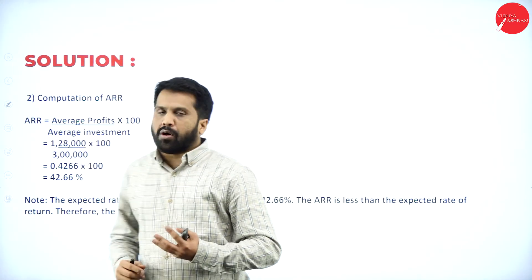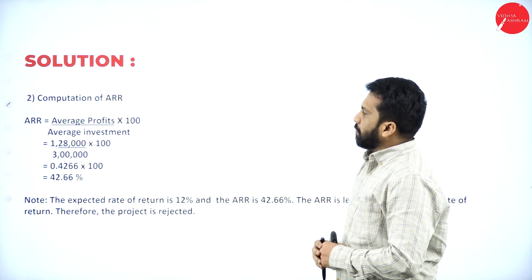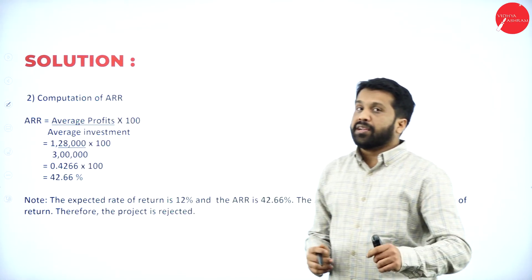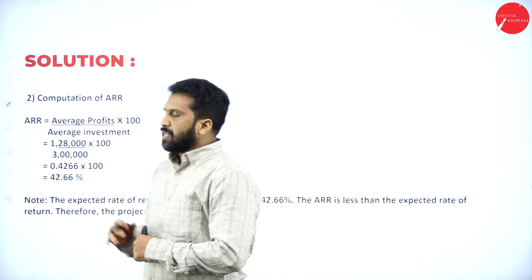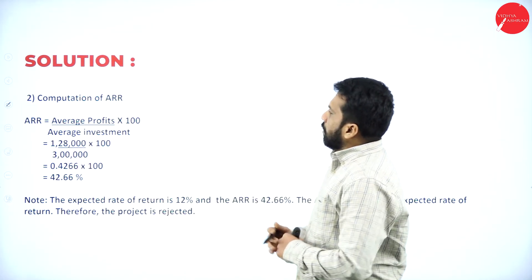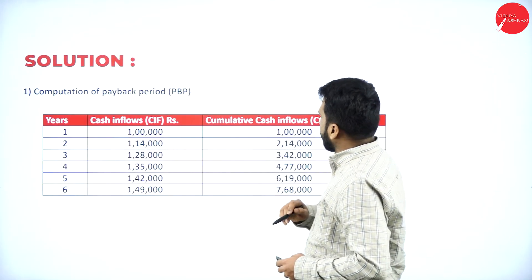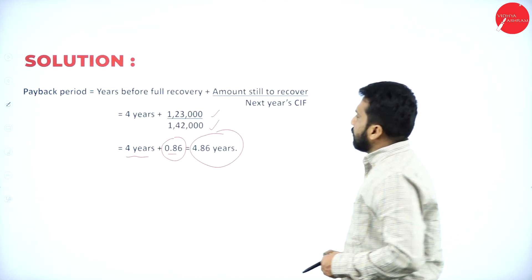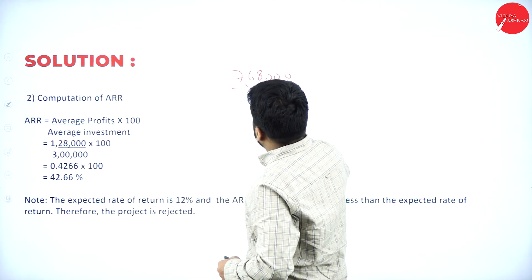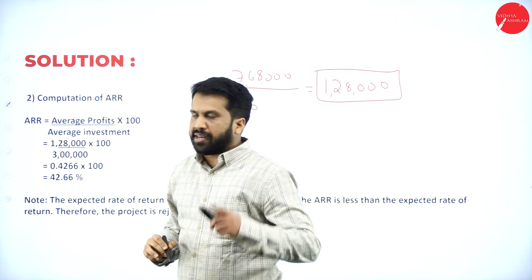Now we calculate ARR. The formula is: average profit divided by average investment, multiplied by 100. Total profit is seven lakh sixty eight thousand. Divide by number of years six — you get average profit of one lakh twenty eight thousand. No discounted factor is used here; we go directly.